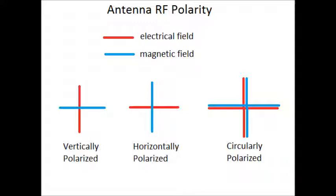On the right is a tricky one, circularly polarized antennas. They have electrical field and magnetic field both horizontally and vertically simultaneously.